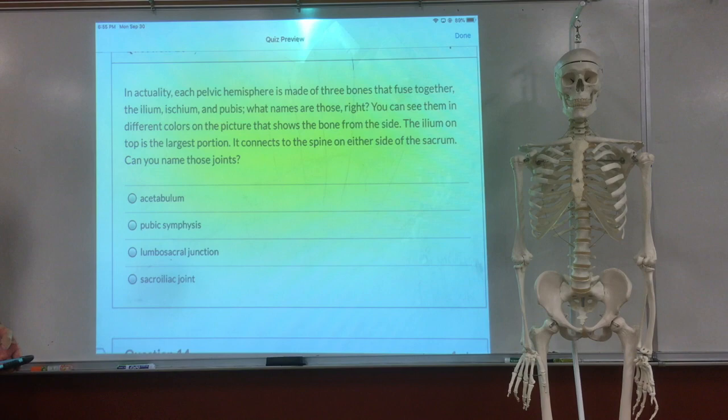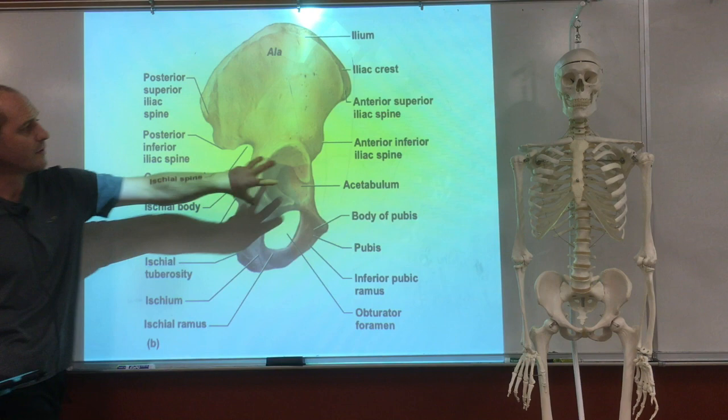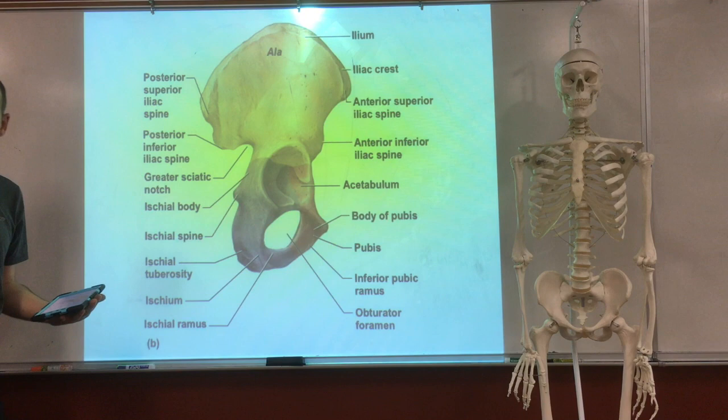The bones that are fused are known as the ilium, the ischium, and the pubis. You can see them in different colors in the picture from the side. The ilium is the largest on top and connects the spine to either side of the sacrum. They meet where the acetabulum is — which is where the leg bone comes into the hip.